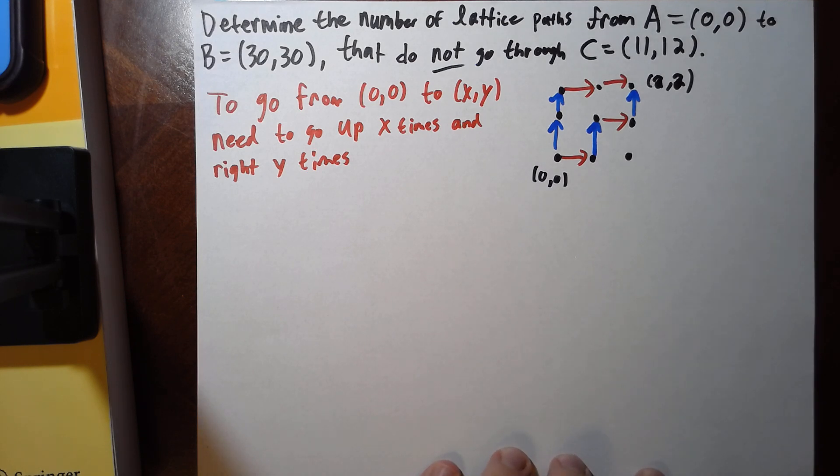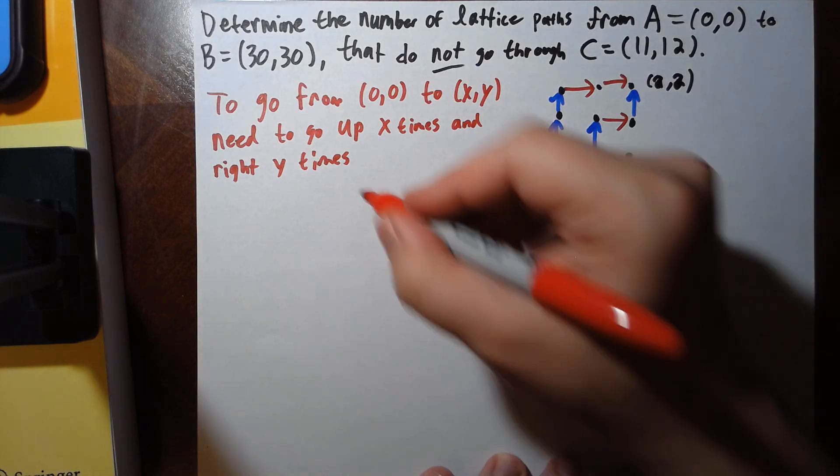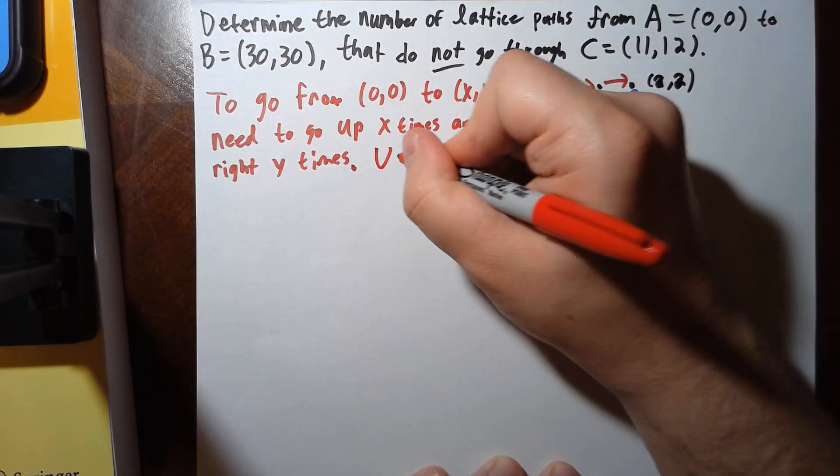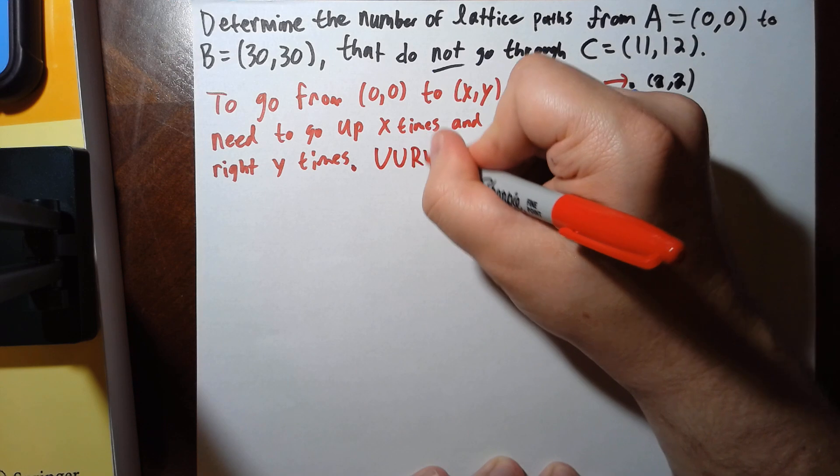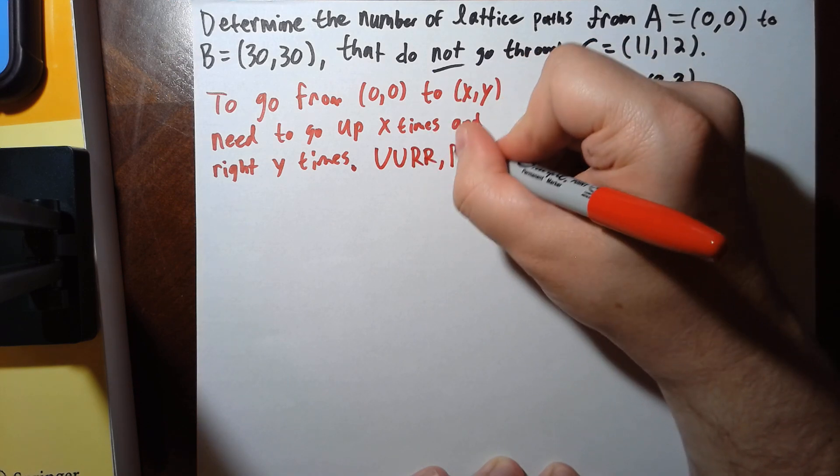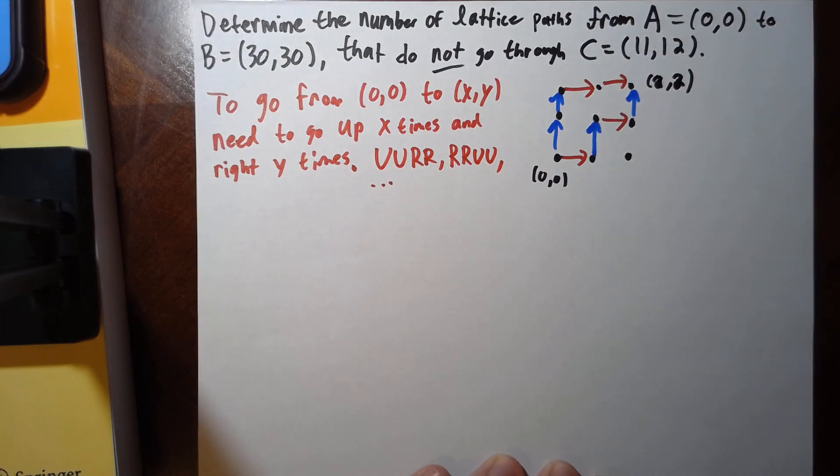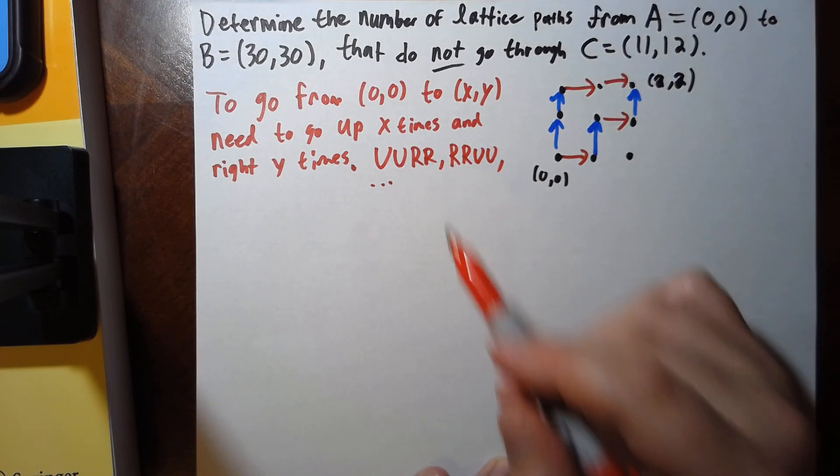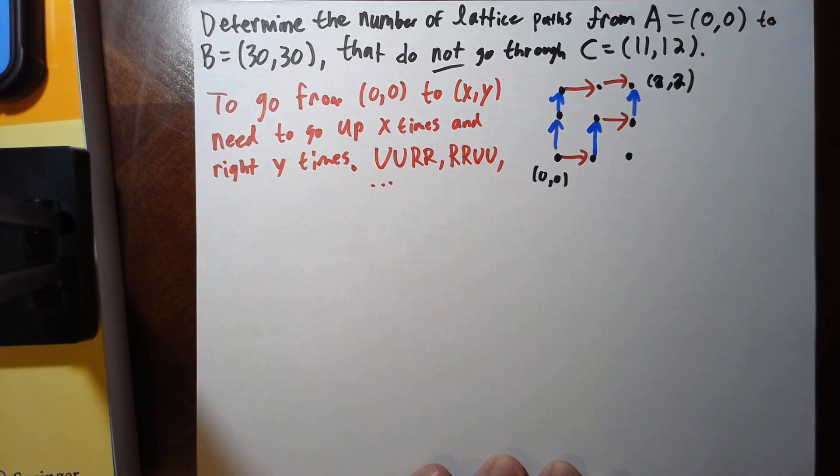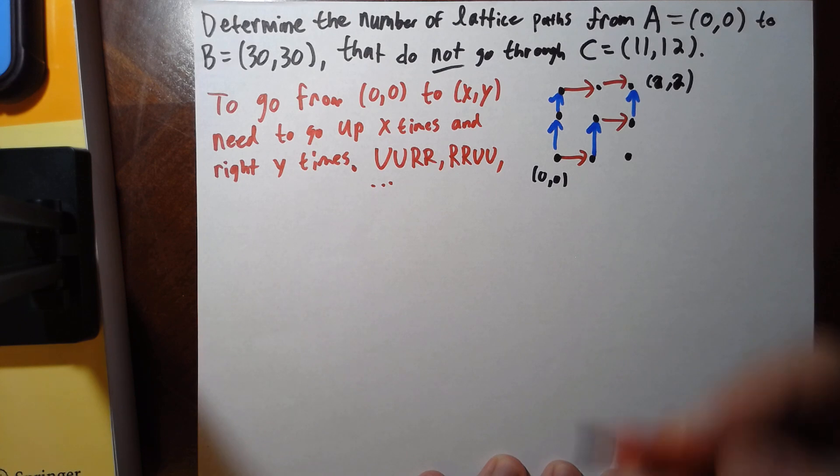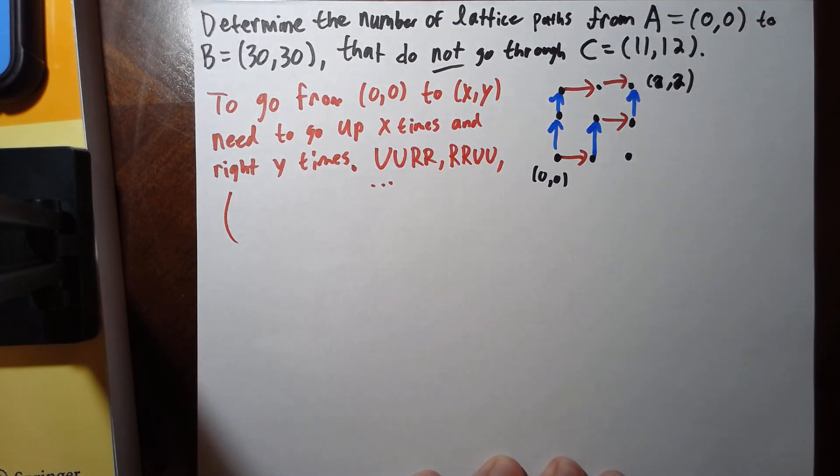And the idea is you encode this as a bit string. So you could go up up right right, or you could go right right up up, and there's tons of different ways. But if you view your ups as zeros and your rights as ones, this is exactly—there are exactly how many ways to do this?